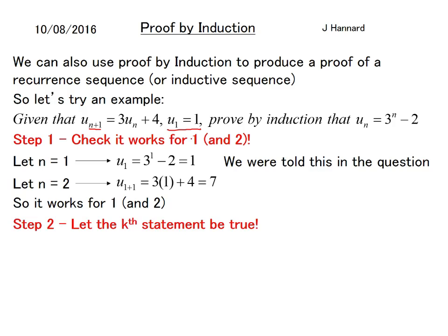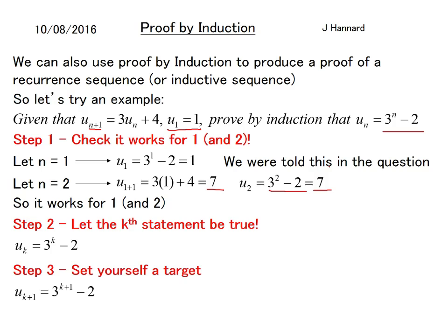So step two, let the kth statement be true. So u_k equals 3^k - 2. And that means u_2 is 3 squared minus 2, which equals 7 as well. So that's why it works for one and two, if you're a bit confused. Step three, set yourself a target. So u_(k+1) equals 3^(k+1) - 2. So that's just replacing any k's that you see with a k plus one.